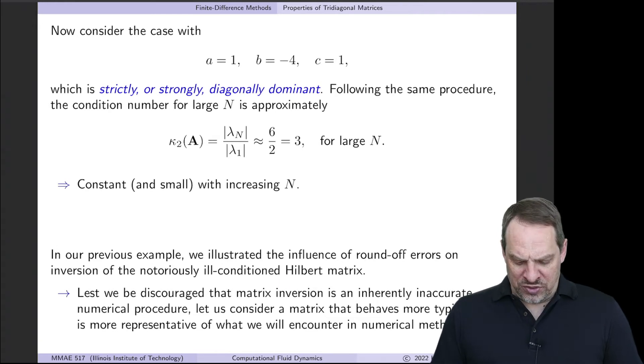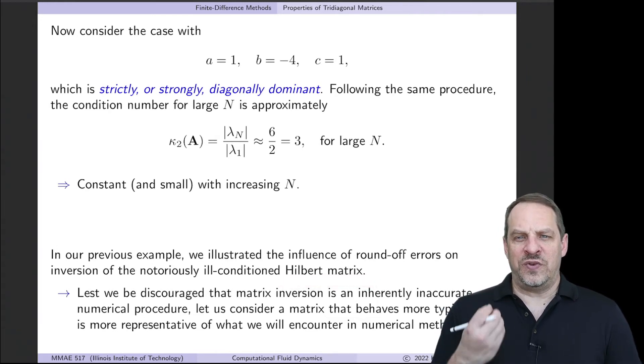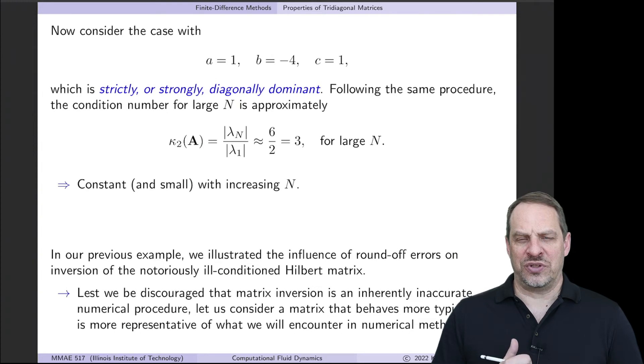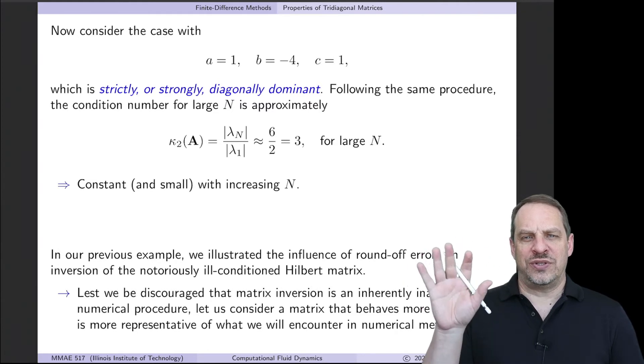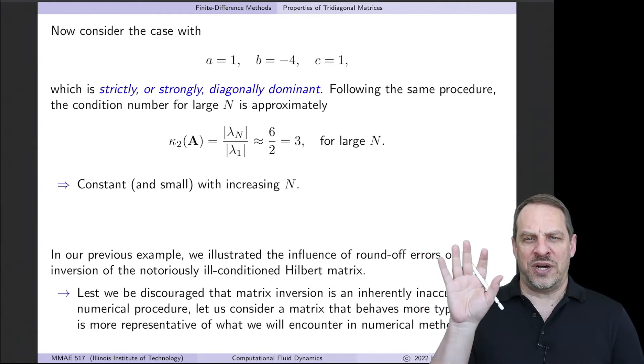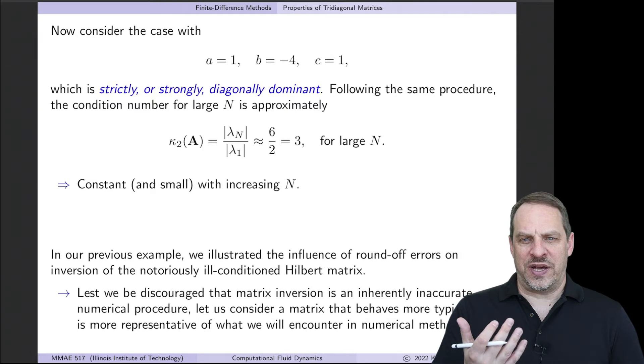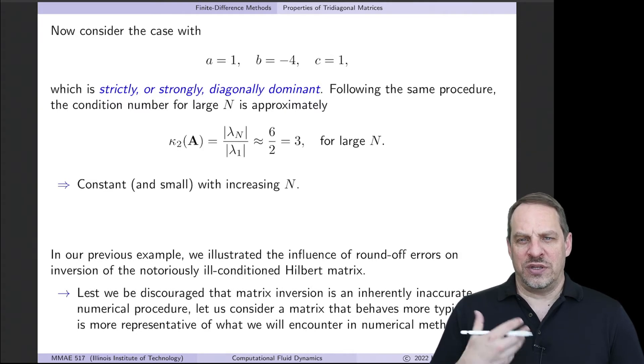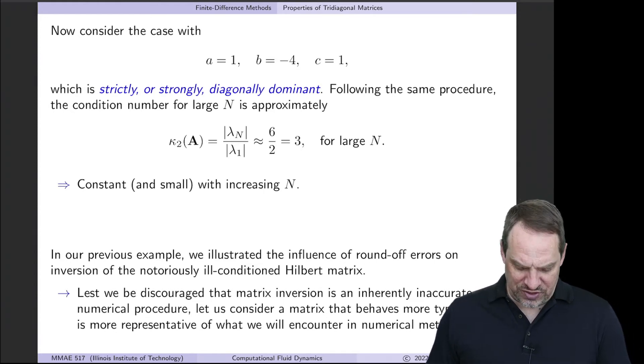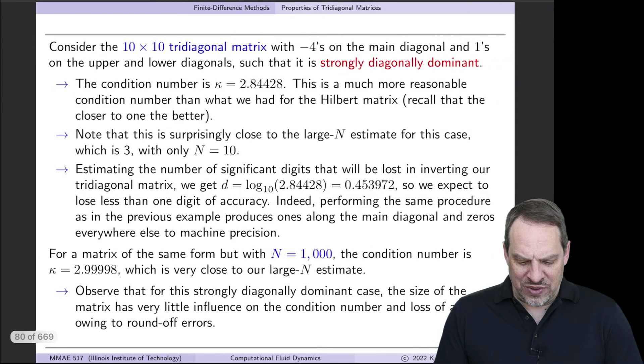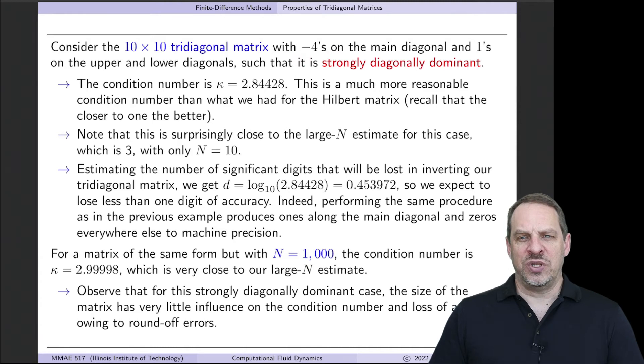Now you may remember the Hilbert matrix that we used in an earlier example to illustrate the effect of ill-conditioned matrices, very large condition numbers on inversion and other matrix operations. Here we're going to do the same thing, same process. We'll take our matrix, which in this case is now a tridiagonal matrix. We'll invert it. We'll multiply the matrix times its inverse, and we should get back the identity matrix if we're to do that exactly. We won't do it exactly. We'll do it numerically, given double precision arithmetic, as we've discussed in previous videos, and we'll see what effect roundoff error has on such operations.